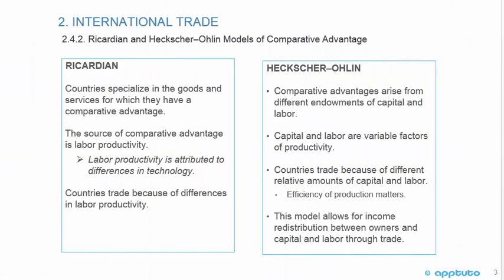Continuing with the differences between the Ricardian and Heckscher-Ohlin models: in the Ricardian model, countries specialize in goods and services for which they have a comparative advantage. The source of comparative advantage is labor productivity, which is attributed to differences in technology, and countries trade because of differences in labor productivity. In the Heckscher-Ohlin model, comparative advantage arises from different endowments of capital and labor — variable factors of productivity — and countries trade because of different relative amounts of capital and labor.